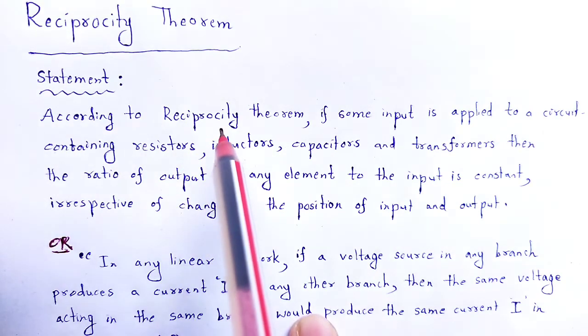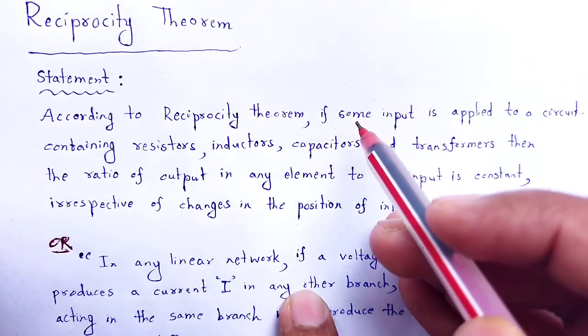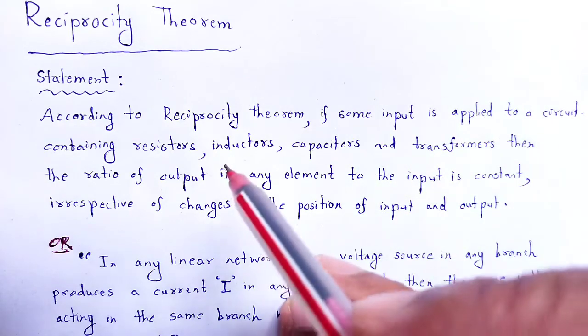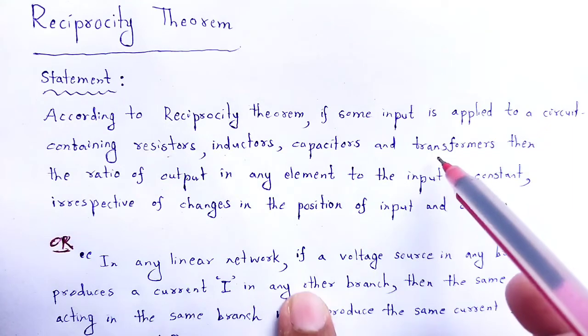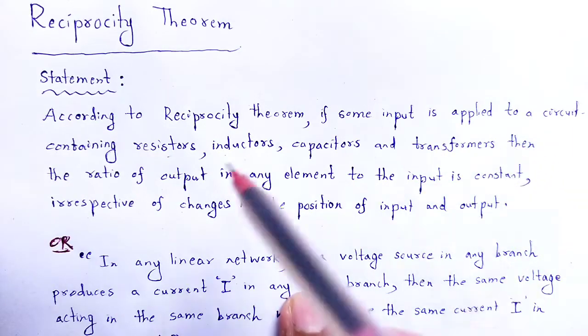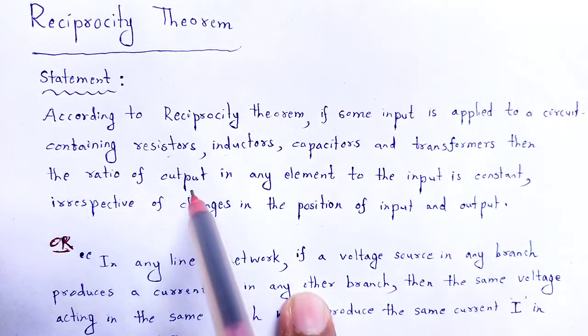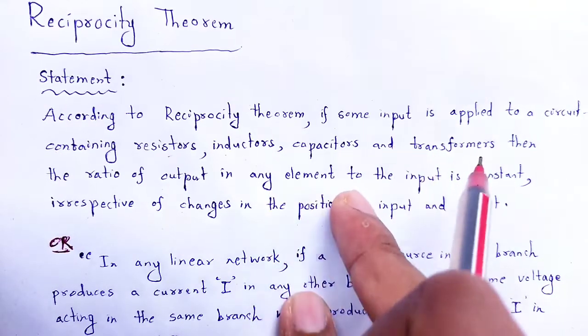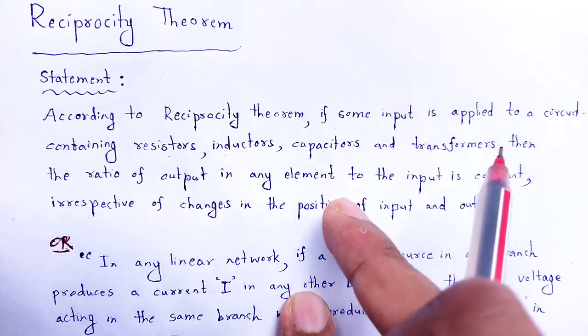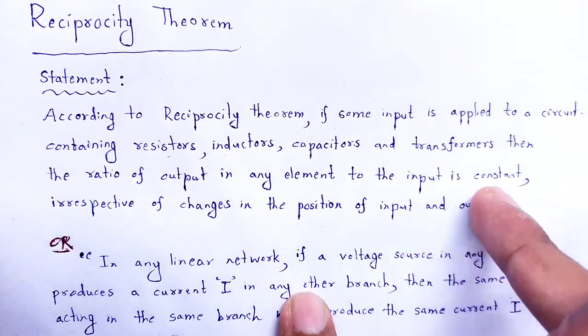According to reciprocity theorem, if some input is applied to a circuit containing resistors, inductors, capacitors and transformers, then the ratio of output in any element to the input is constant. The ratio of output in any element to that of input is constant.